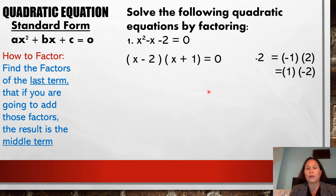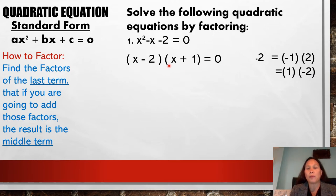What we do next is write the factored form. We write x in both parentheses — we have two parentheses here. So we write x minus 2 and x plus 1, is equal to 0. Or you can also write it as x plus 1 times x minus 2.